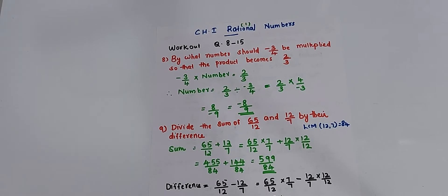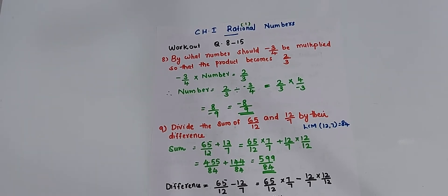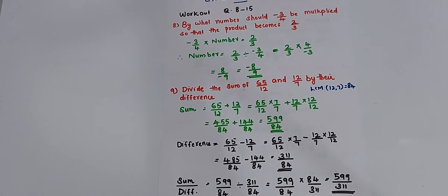The LCM is 84. So, 65 by 12 plus 12 by 7 equals 65 by 12 into 7 by 7 plus 12 by 7 into 12 by 12. You will get 455 by 84 plus 144 by 84 equals 599 by 84. And for the difference: 455 by 84 minus 144 by 84 equals 311 by 84.